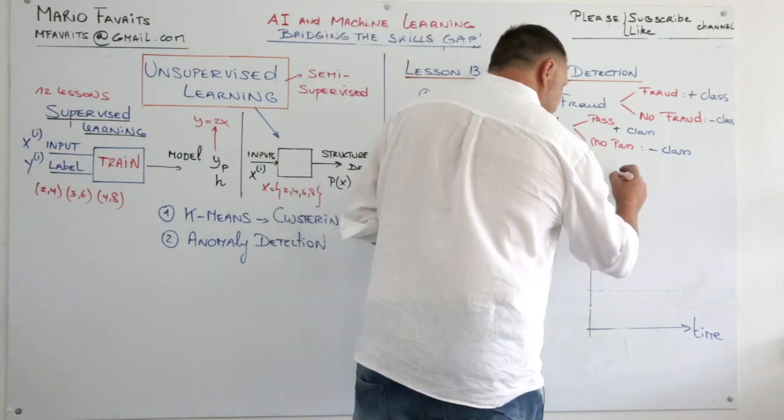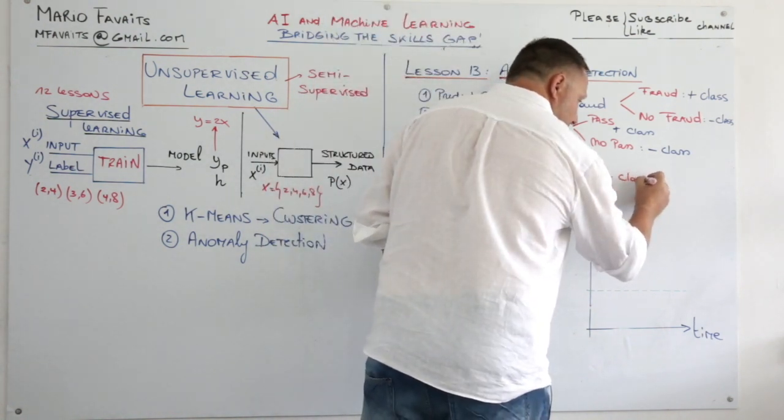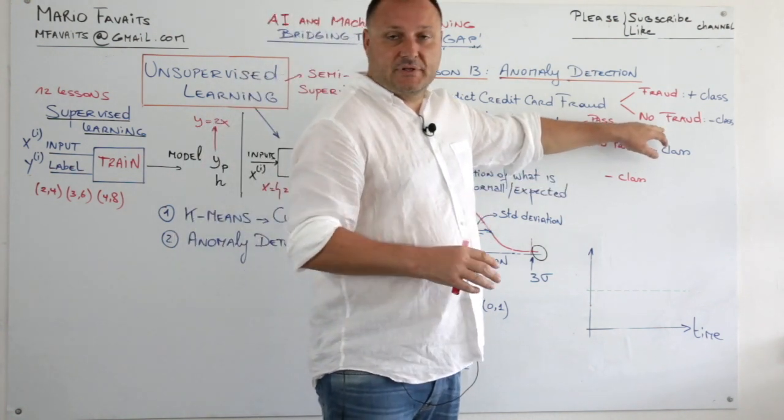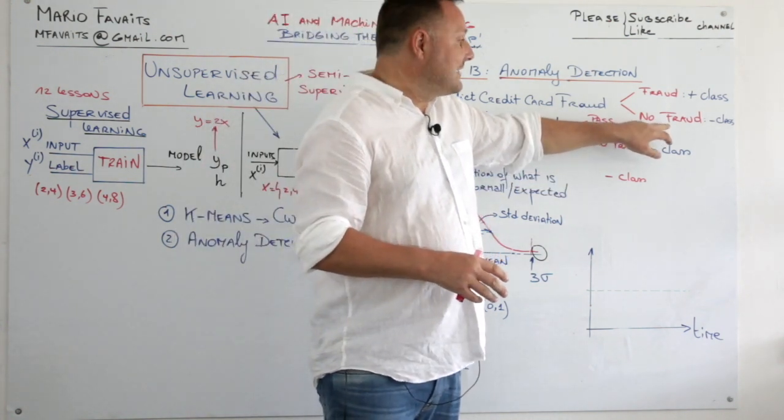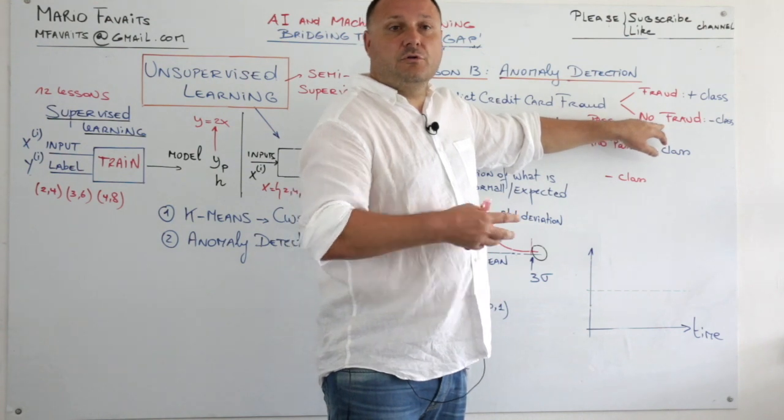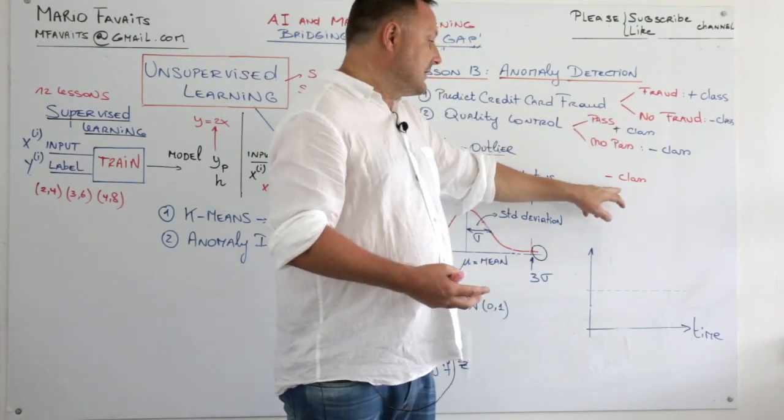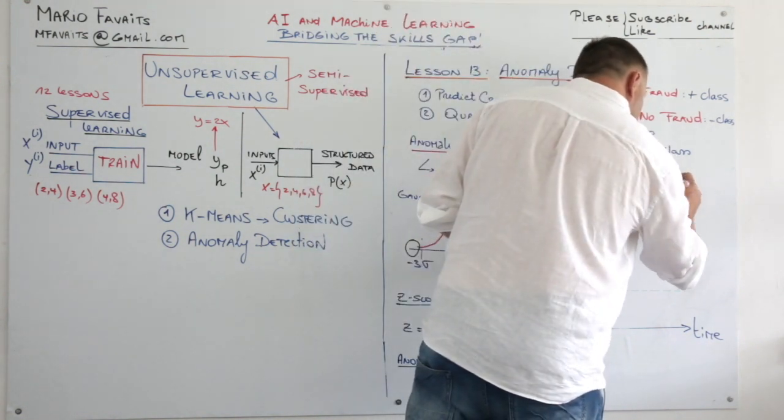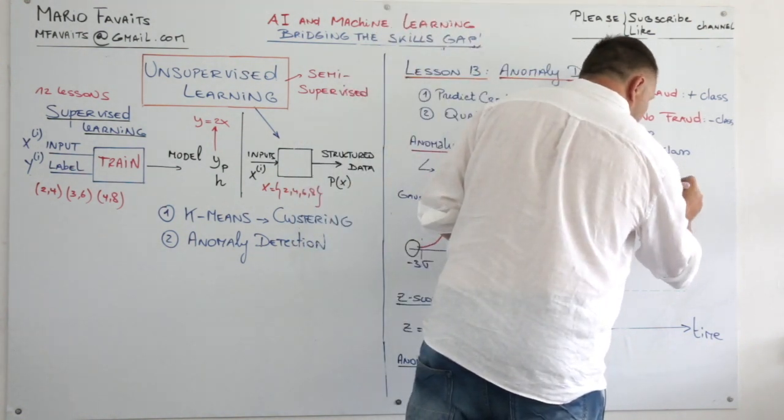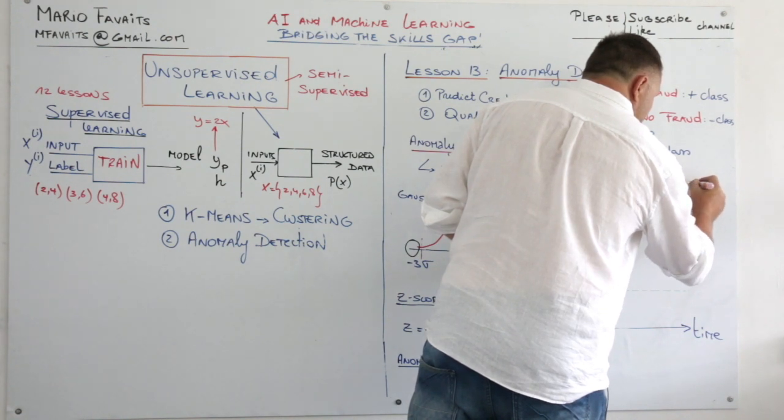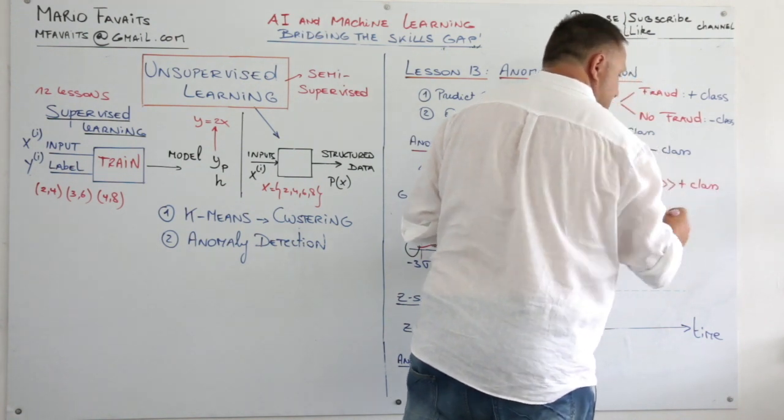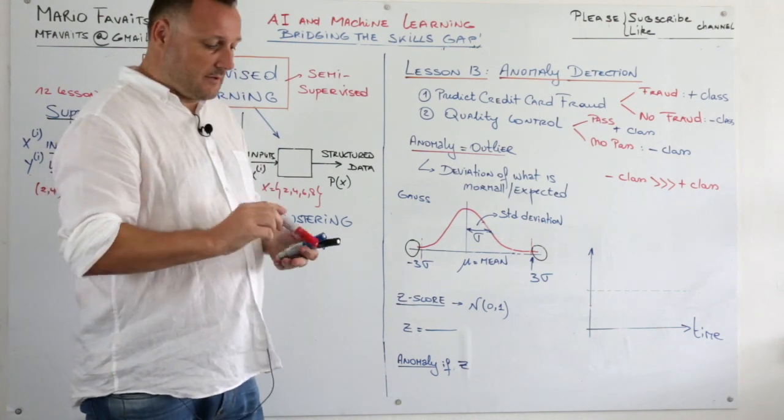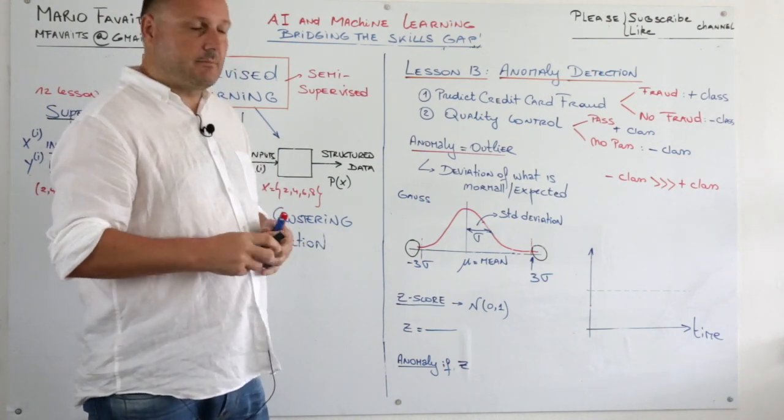But there is something special about this data here. That means that the negative class, and let's keep it to credit card transactions, no fraud. So all non-fraudulent transactions will be in the negative class. And the negative class is always a lot larger than the positive class.